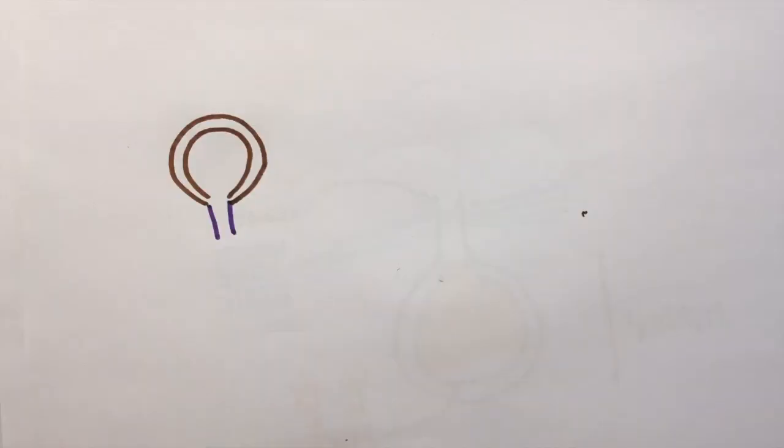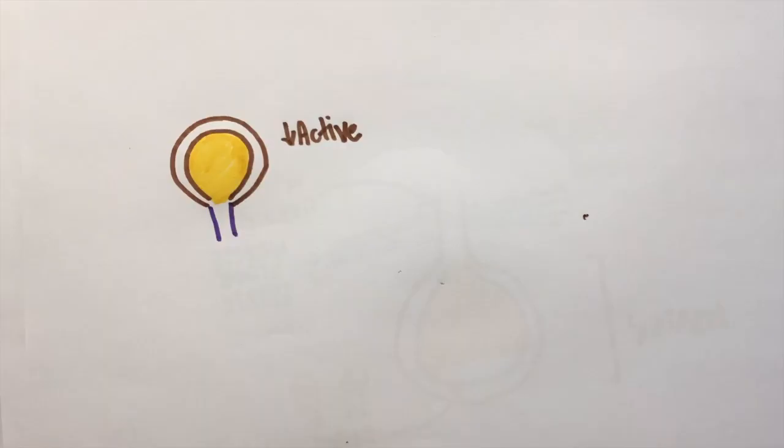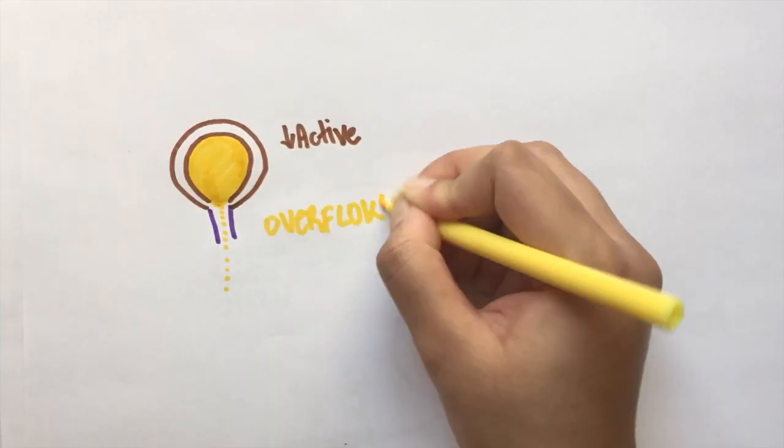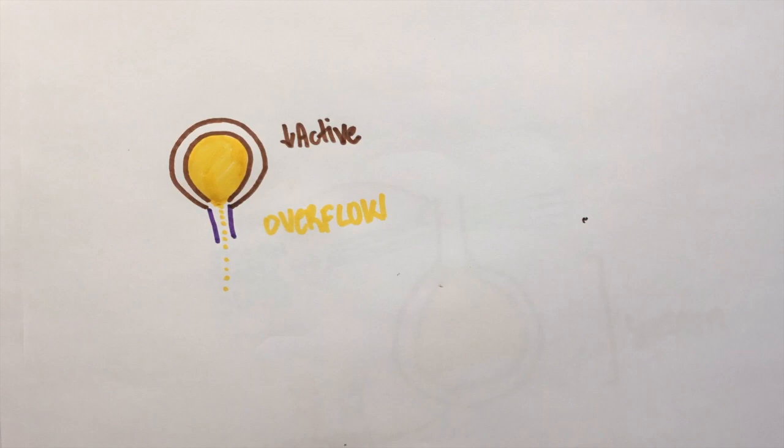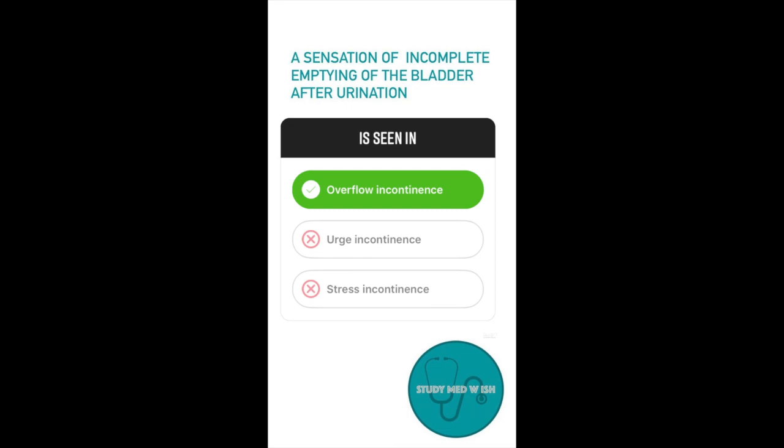In patients with overflow incontinence, the muscle here is underactive. This means that although there is a lot of urine in the bladder, the muscle won't contract. So at one point, a lot of urine builds up and it overflows. Hence, this kind of incontinence is called overflow incontinence. Since the muscle isn't contracting properly, even after urination, there will be some amount of urine in the bladder. So patients will have a sensation of incomplete bladder emptying even after voiding.